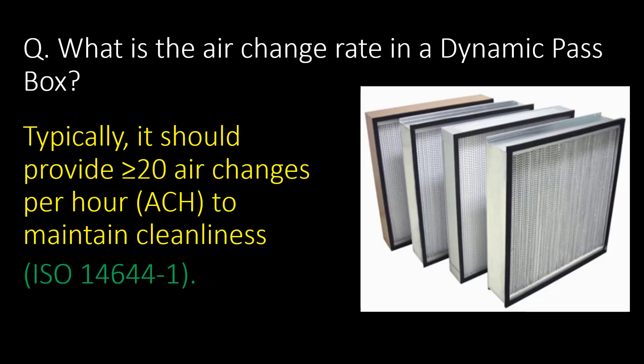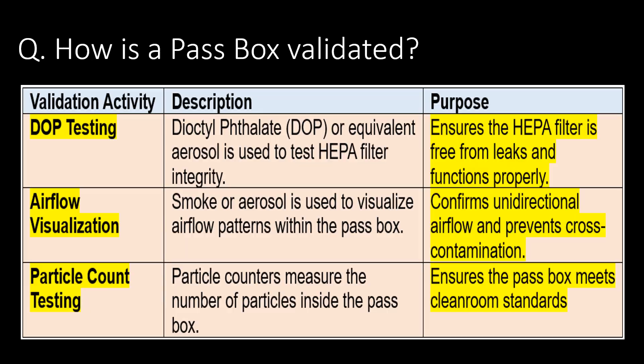What is an air change rate in a dynamic pass box? The air change rate in a dynamic pass box is typically more than 20 air changes per hour to maintain cleanliness. Reference: ISO 14644-1.